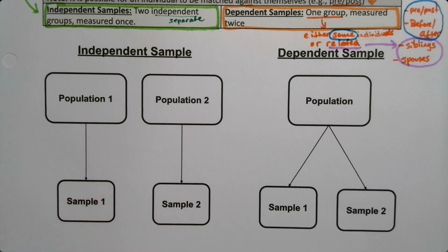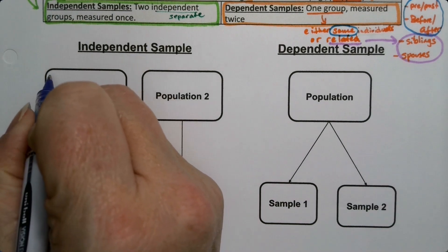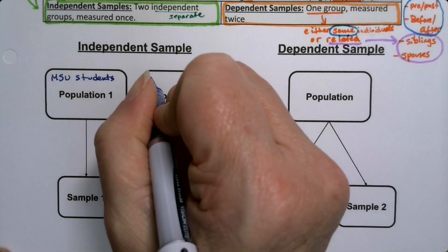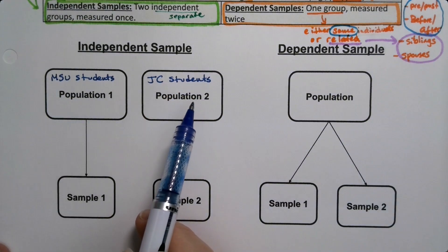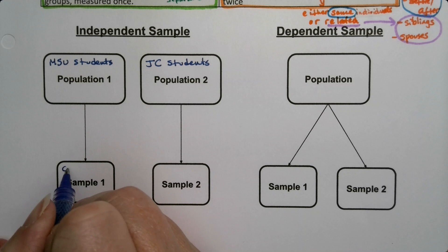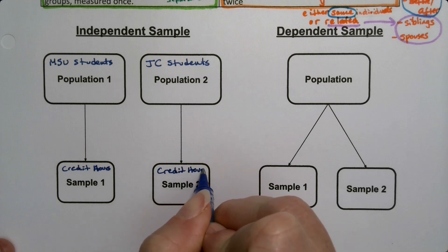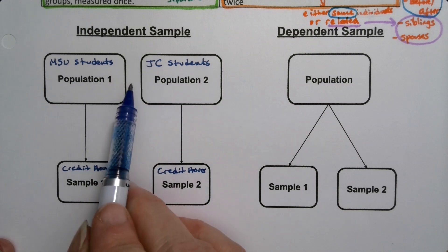So for an independent sample, we have a group of MSU students and a group of Jackson College students. We have a random group of each, and then we measure things from them. For example, we could want to know their credit hours from both groups. They're two separate groups, and we measure the credit hours from them — two separate groups measured once.